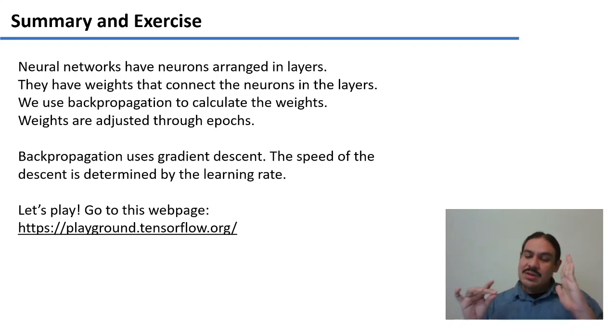This method explores the loss function and uses something called gradient descent. The speed of the descent is determined by our learning rate. If it's too little, we'll get stuck in local minimum. If it's too much, we'll skip around erratically.